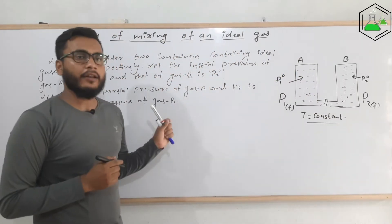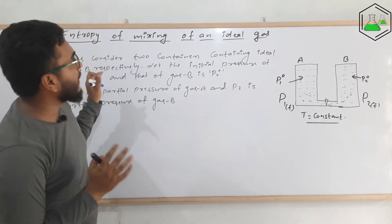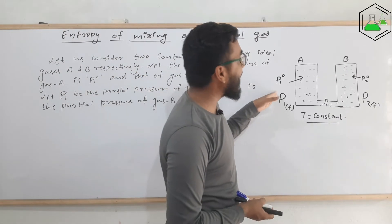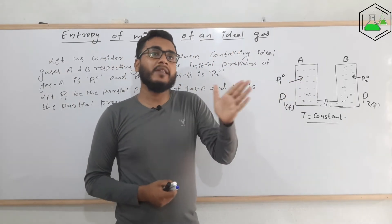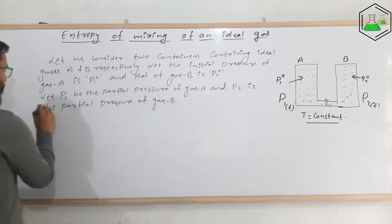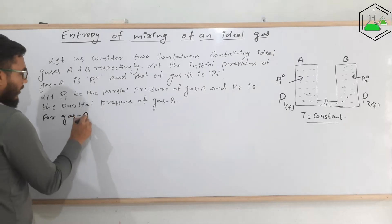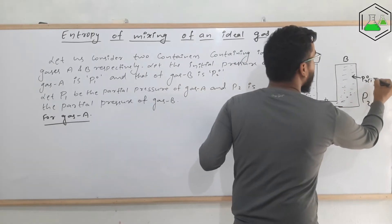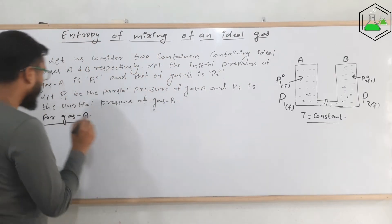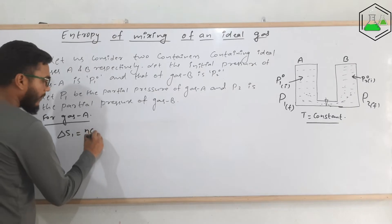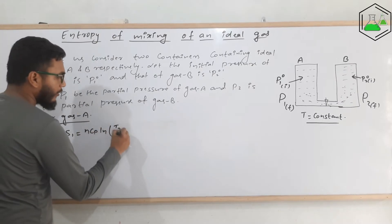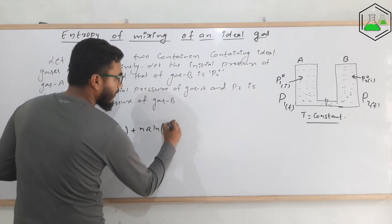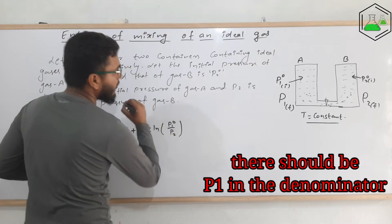This is the general consideration to find out what happens to the entropy when two gases of different entropy are mixed together. Since there is a pressure term, the dependence of entropy on temperature and pressure will be applied here. For gas A, the initial pressure is p1 naught and temperature remains constant. We know that ΔS₁ = n·Cp·ln(T₂/T₁) + n·R·ln(p1 naught / p1).